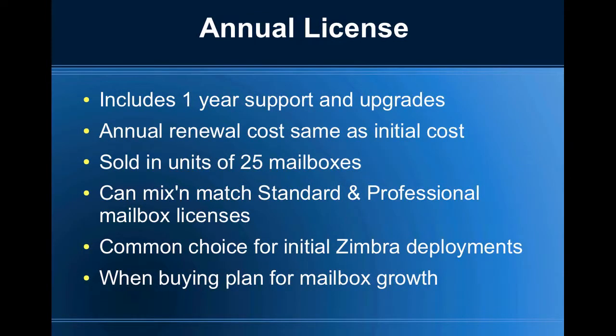The annual licence includes one year support and upgrades. The annual renewal cost is the same as the initial cost, so you're paying the same fee every year. It's sold in units of 25 mailboxes, so if you need 60 mailboxes you need to buy 75 mailboxes, and if you need 30 mailboxes you have to buy 50 mailboxes. You can mix and match the standard and professional mailbox licences. It's a common choice for initial Zimbra deployments. When buying this plan, plan for mailbox growth so you don't have to expand your licence straight away.